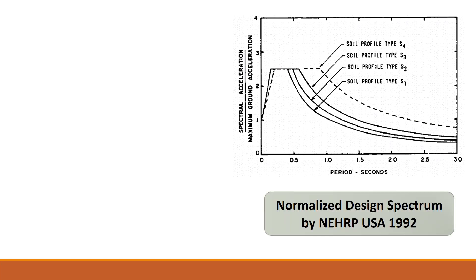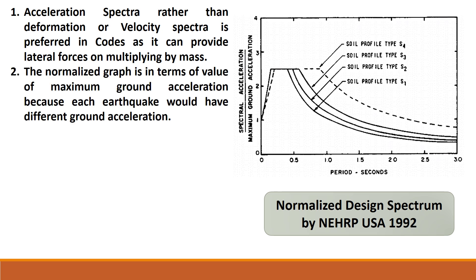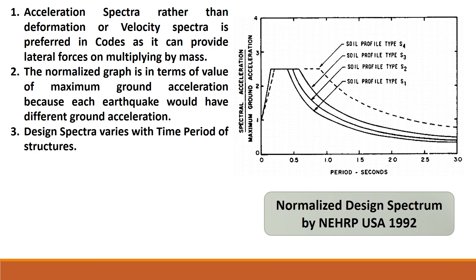The design spectra was adopted by codes in the USA around 1992. The first point is that the acceleration spectra, rather than the deformation or velocity spectra, is preferred in the codes as it can provide lateral forces on multiplying by the mass. The second point is that the normalized graph is in terms of the value of maximum ground acceleration, since each earthquake would have different ground accelerations. The third point is that the design spectra varies with the time period of the structure.